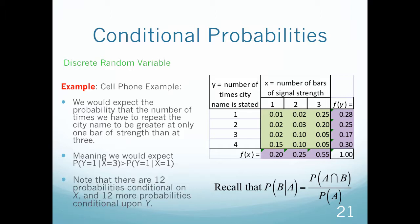Note that there are 12 probabilities conditional on X, because all 12 joint probabilities can each be divided by the marginal probability of X, and 12 more conditional on Y. When you do these problems, it's helpful that they are word problems because it's easier to interpret them rather than just using numbers.